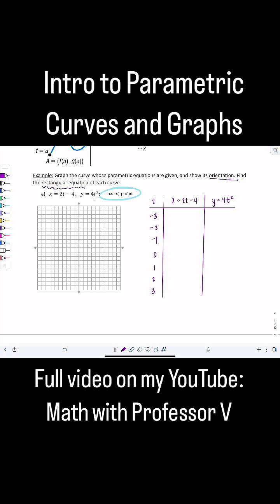All right, so let's see here. x is 2t minus 4. So 2 times negative 3, that's negative 6 minus 4, would give me negative 10.